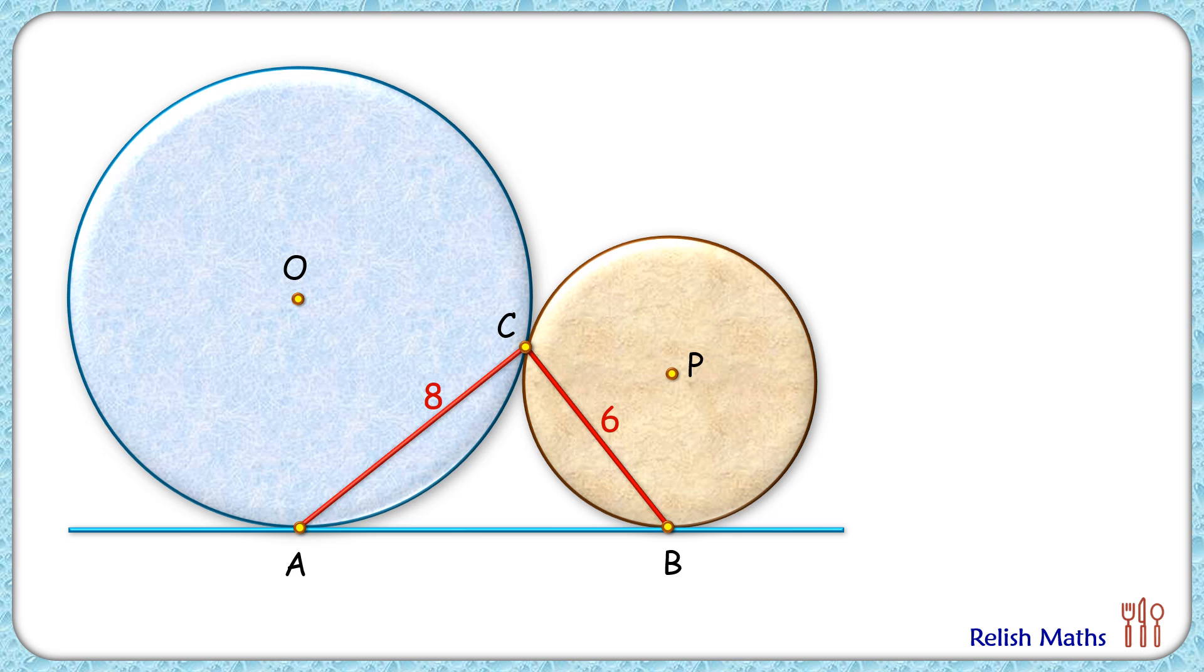We will solve it in two parts whereby the first part will find the length of AB and the second part will find the radius of the circle.